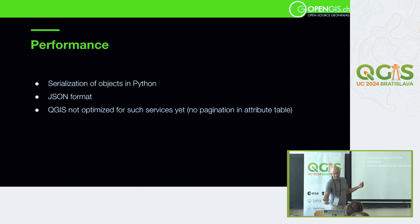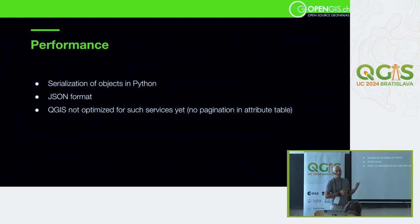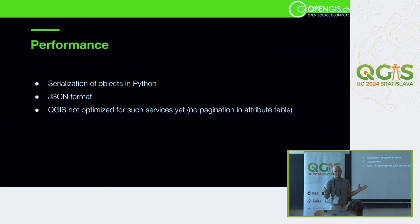The performance issue comes from serialization, the format, and the fact that QGIS is not yet optimized for this kind of provider. The attribute table is even worse because it's not paginated in QGIS — OGC API Features are paginated so you get 100 features per page, but the attribute table waits for all features to load, so QGIS freezes until it's done. That's quite ineffective.